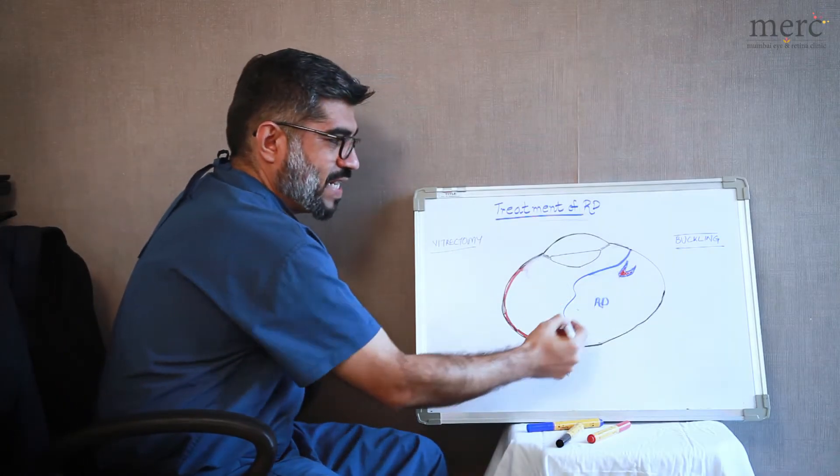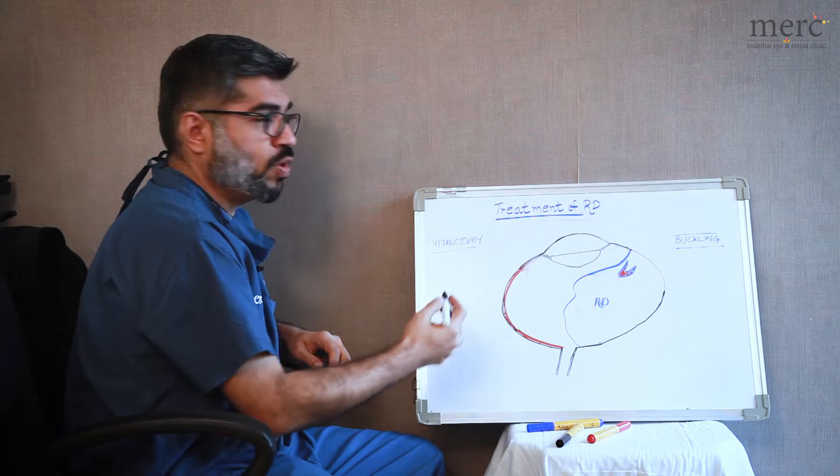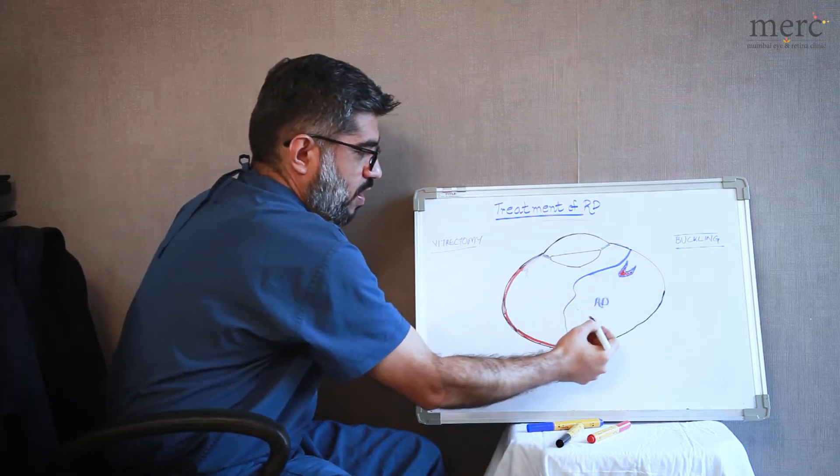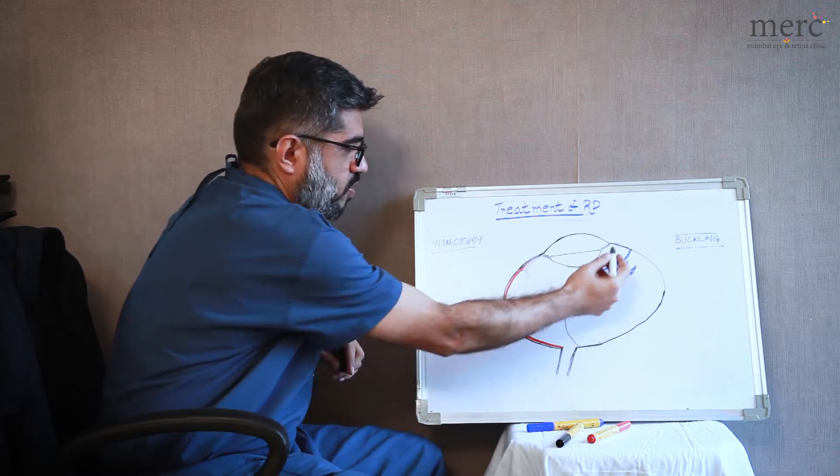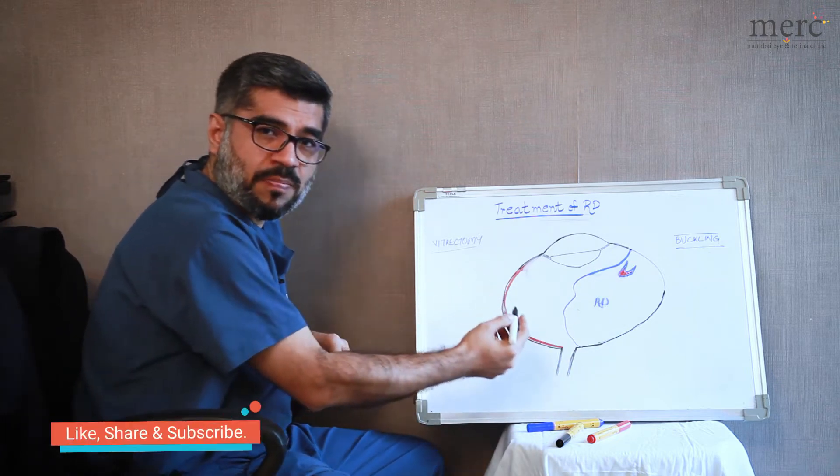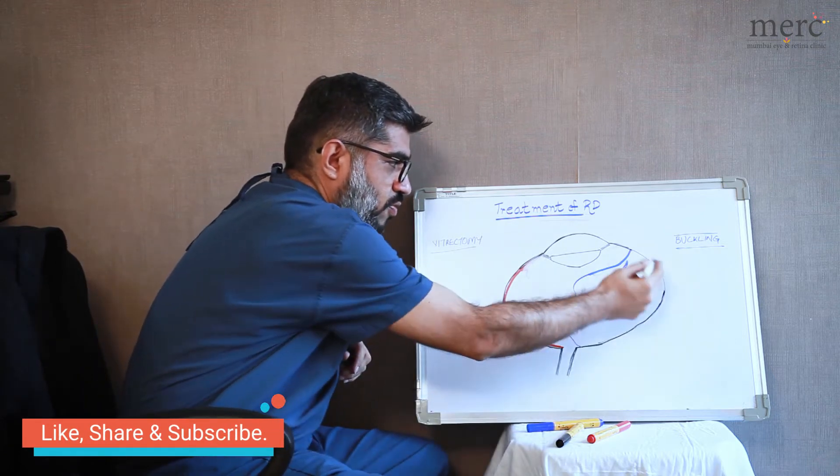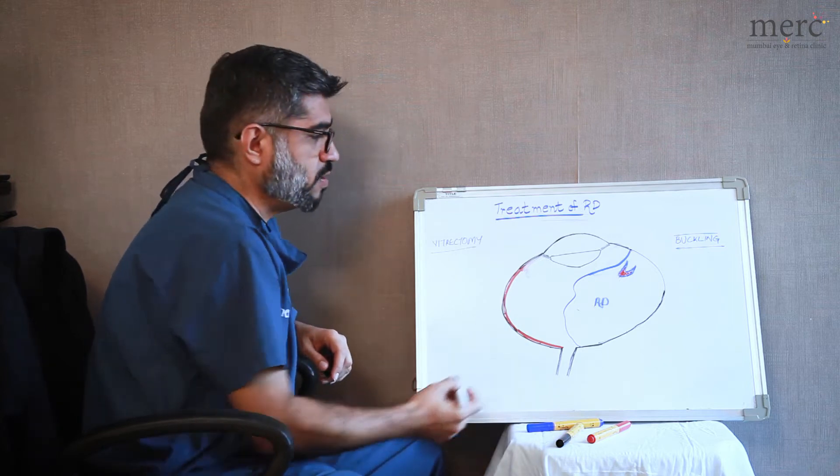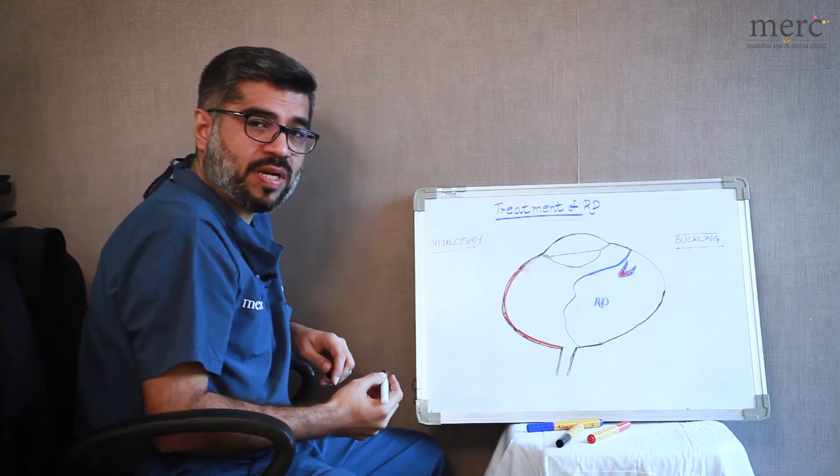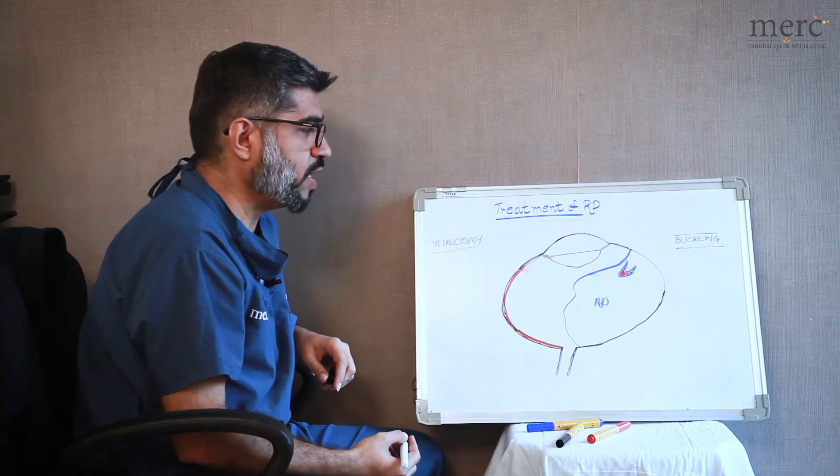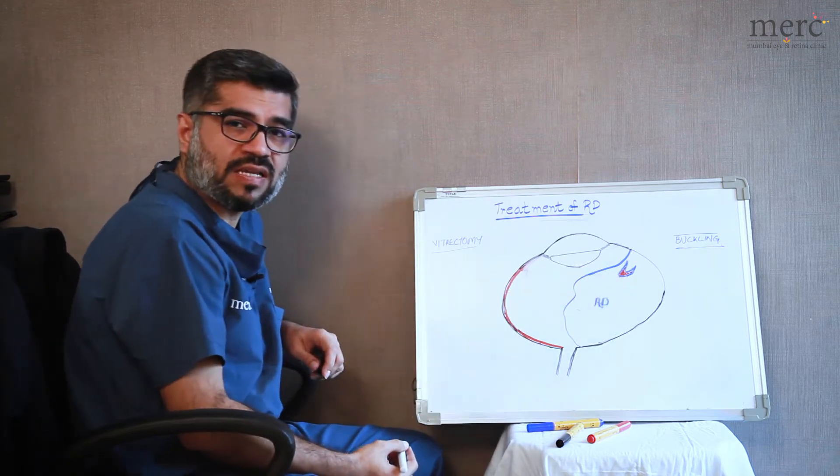Now this is a simplistic diagram of how a retinal detachment looks like. This is the retinal detachment part which is shown in blue color and this is the attached retina. So this is a patient with a partial retinal detachment in which one part of the retina is detached and the other part is still attached. This is the culprit, this is the retinal tear which is often referred to as a horseshoe retinal tear due to which this patient has a retinal detachment.